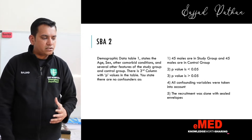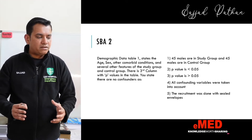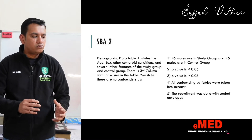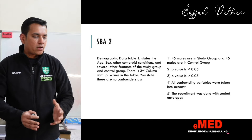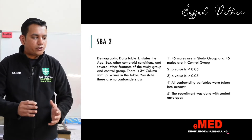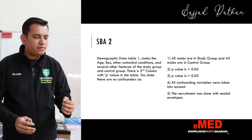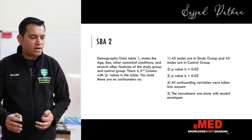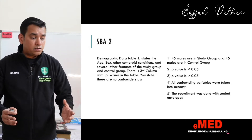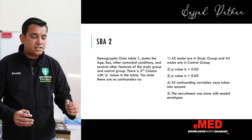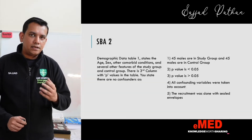Demographic data Table 1 states age, sex, and other comorbid conditions of the study group and control group. There is a third column with p-values. In this table you state there are no confounders as 45 males are in the study group and 45 males are in the control group. The options are: p-value less than 0.05, p-value greater than 0.05, all confounding variables were taken into account, or recruitment was done with sealed envelopes.